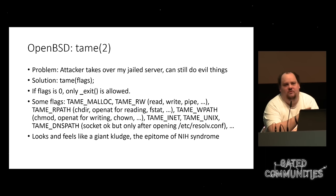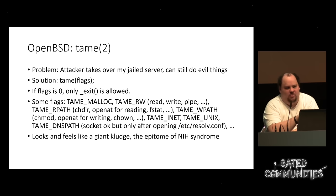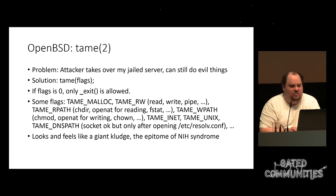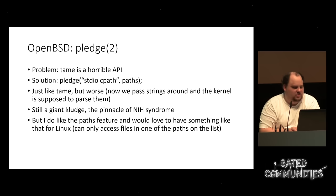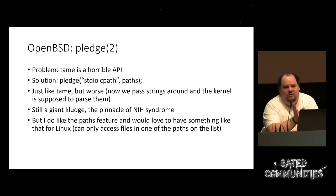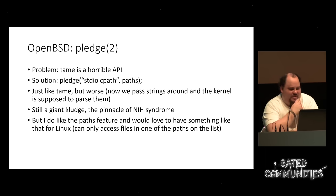OpenBSD came up with an API called tame. The idea is similar to Capsicum but it restricts somewhat more. My problem with this API is that they have these flags — if you need some other way to restrict the process, you can't, because all you have is the flags they provide. It's not programmable. If you want to support different versions of OpenBSD you have an ifdef: if this flag is available use it, otherwise not. Portability is a bit bad. The OpenBSD people agreed, so they have a new API now called pledge.